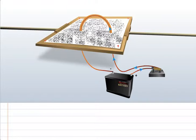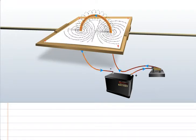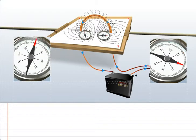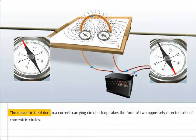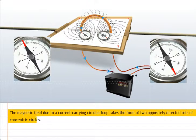When current passes through the loop, the iron filings arrange themselves in two sets of concentric circles on the cardboard. Further, if you place two compasses on each set of concentric circles, you will notice that the needles point in opposite directions. This shows that the magnetic field due to a current carrying circular loop takes the form of two oppositely directed sets of concentric circles.